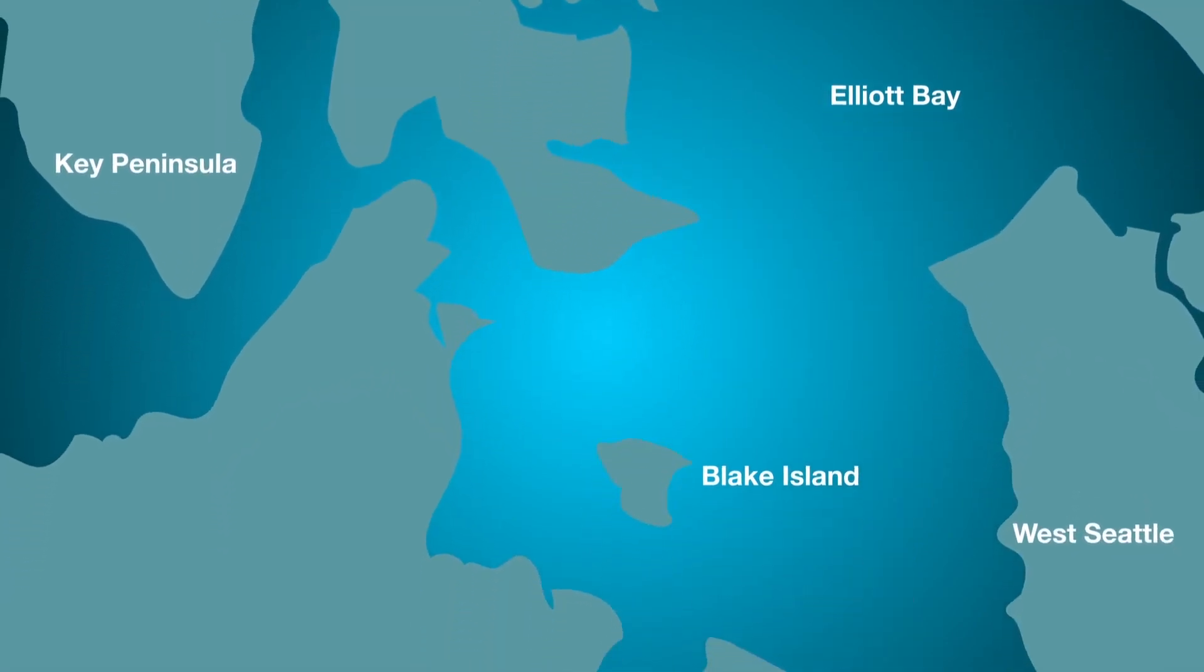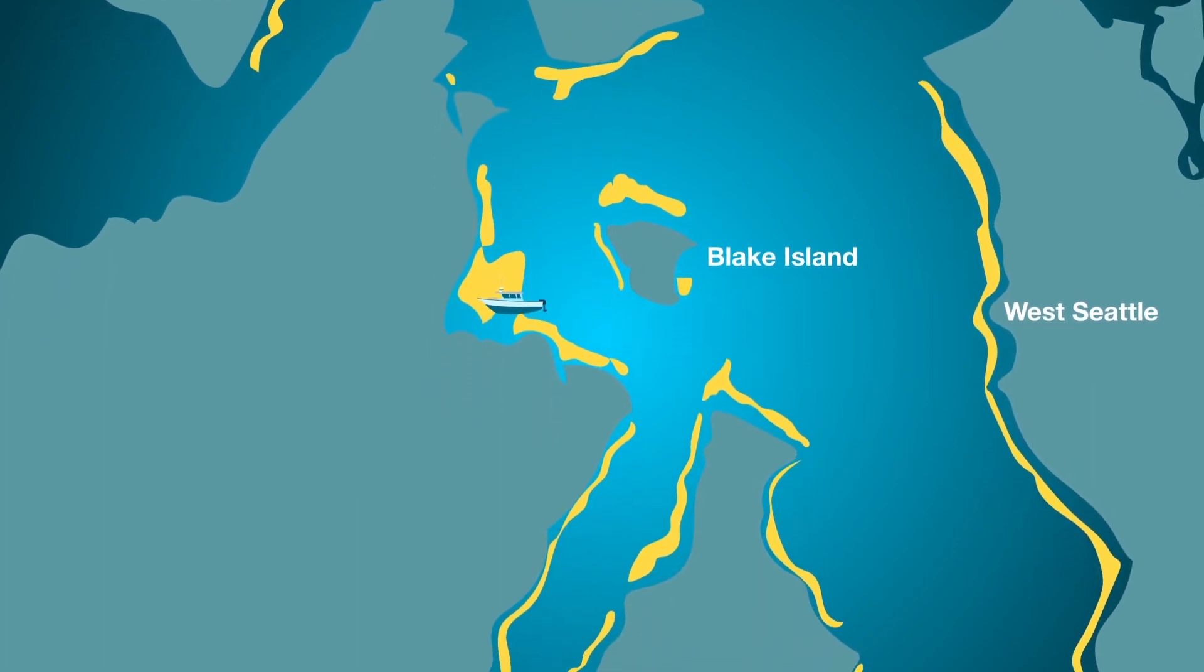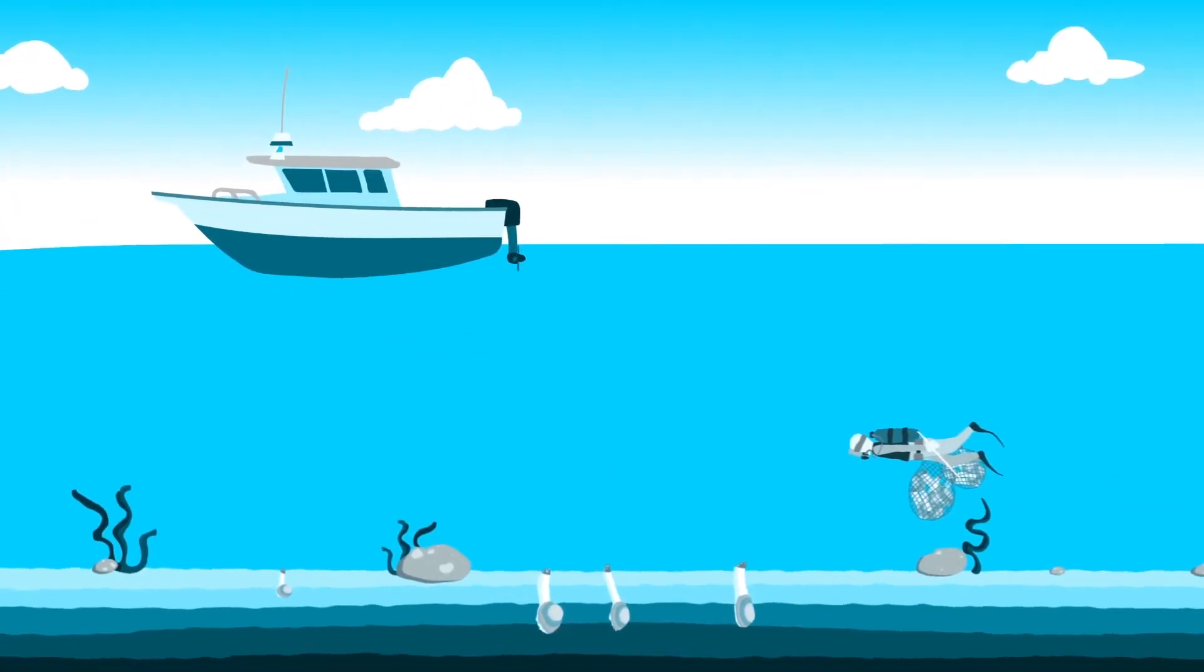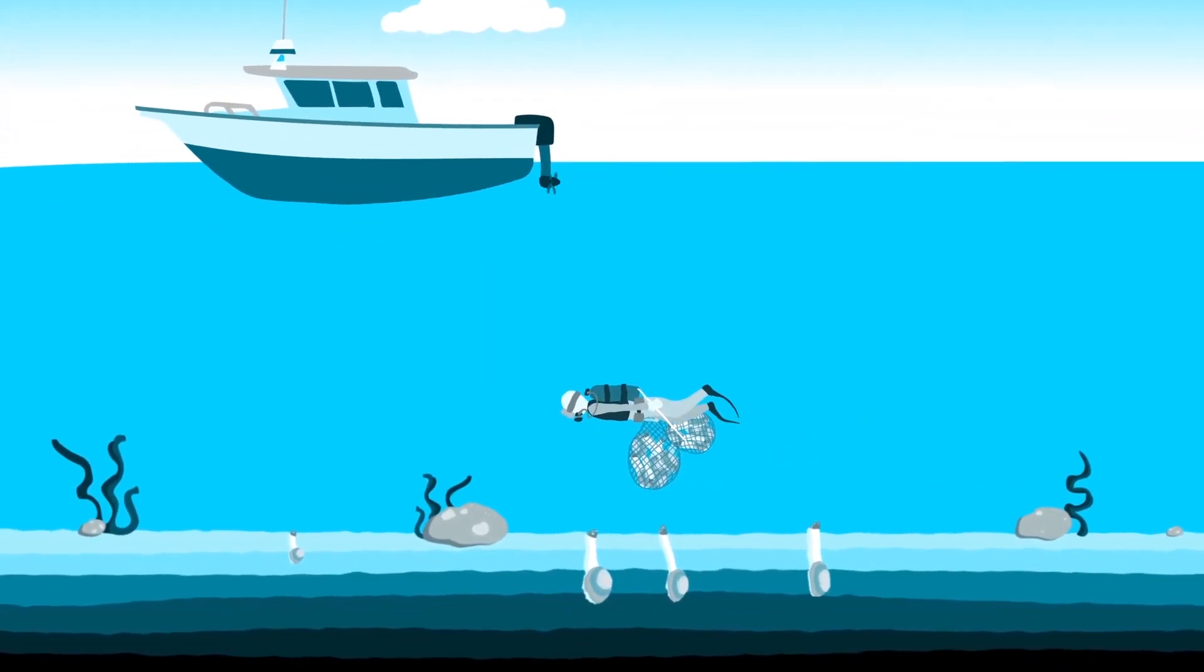Harvesting wild geoduck is only allowed in certain areas of Puget Sound. The state auctions off each area, but there's still a limit on how much can be dug up within each area. When divers reach the quota, they're supposed to stop.